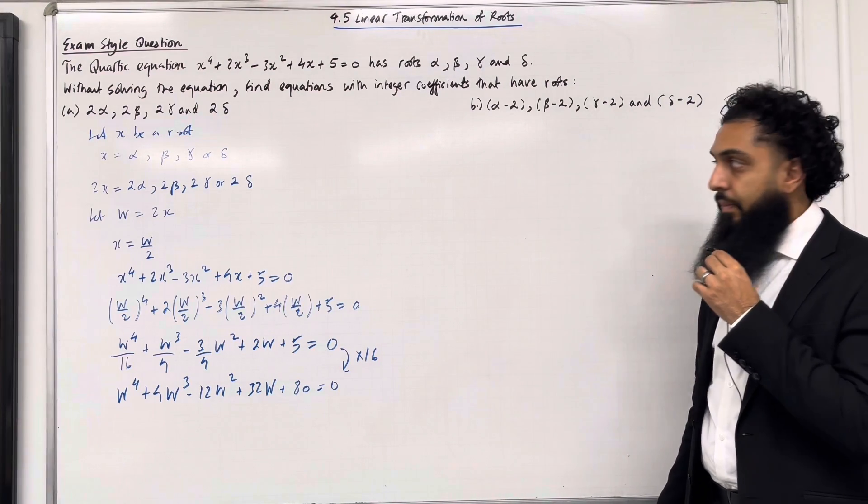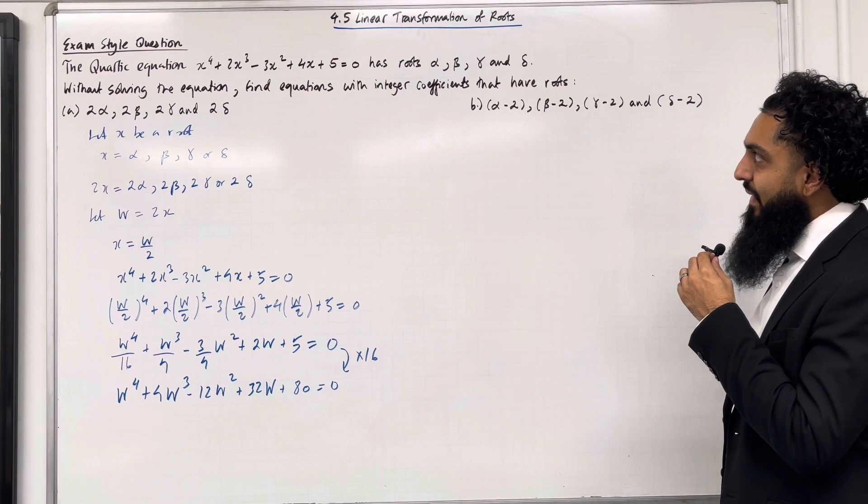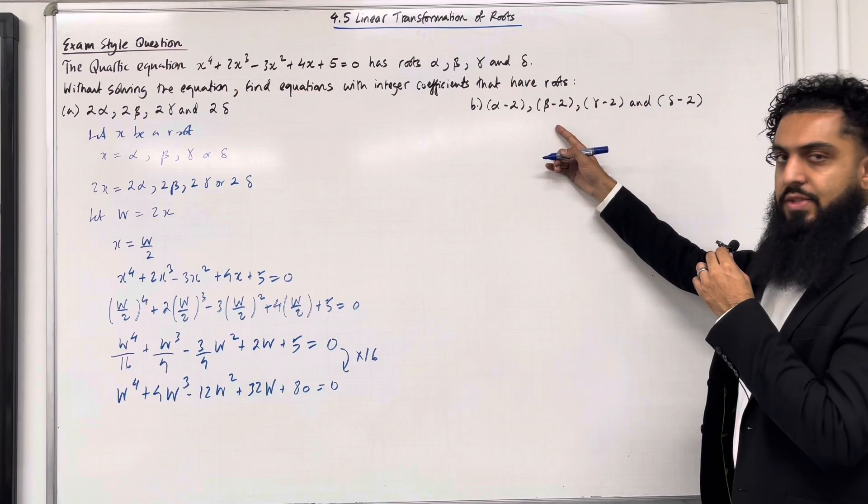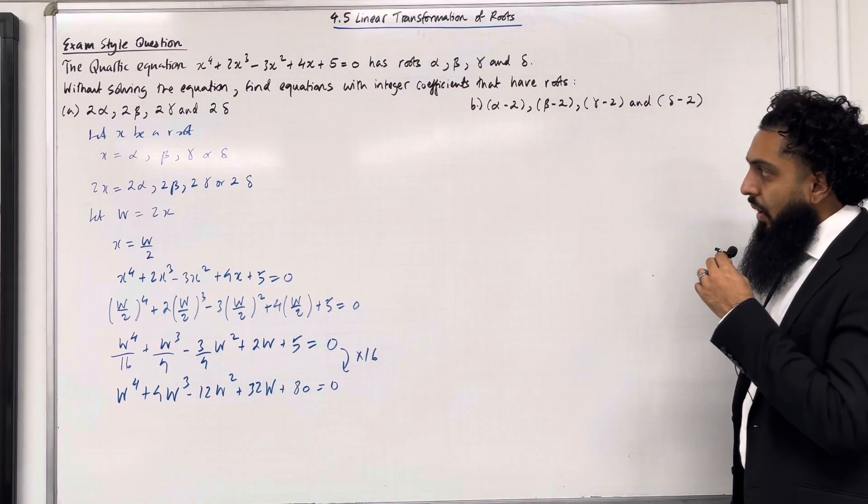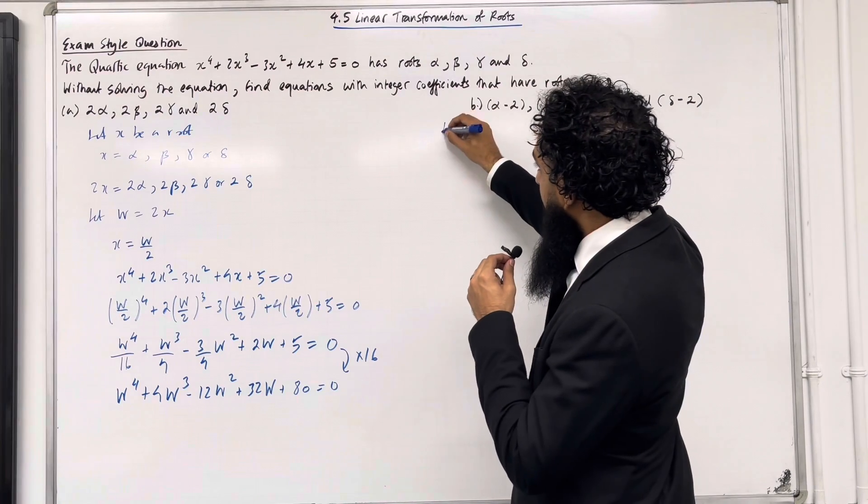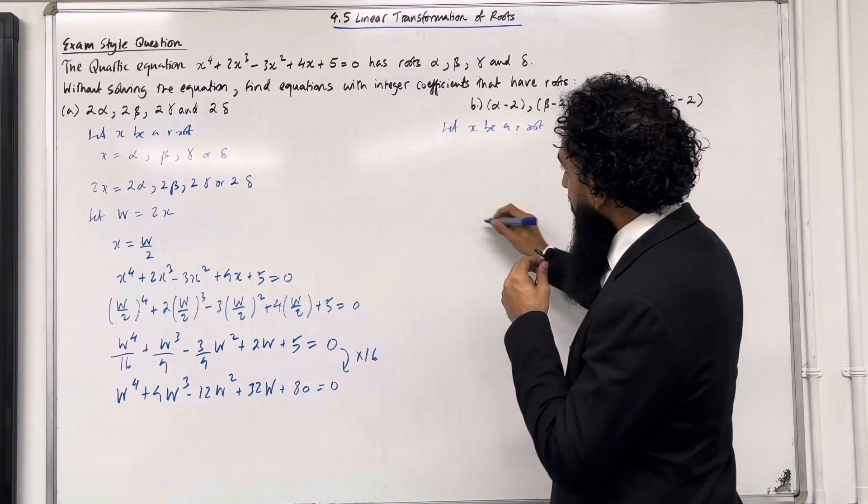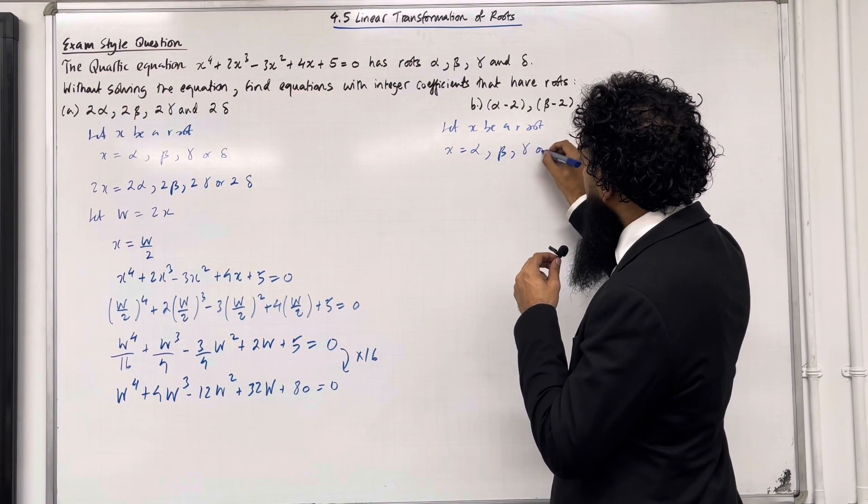Moving on to part B. So in part B we want to find the equation with integer coefficients that have roots α - 2, β - 2, γ - 2 and δ - 2. Again I can start by saying let x be a root. So x can equal α, β, γ or δ.